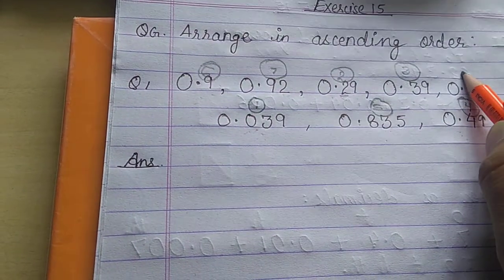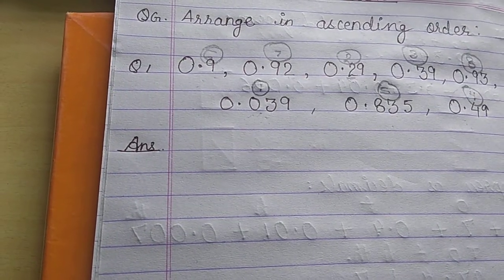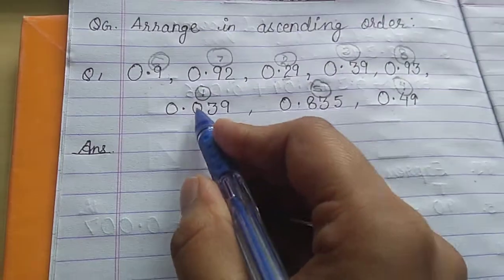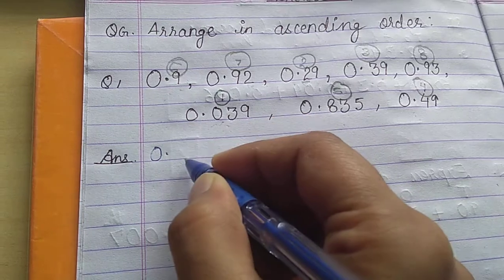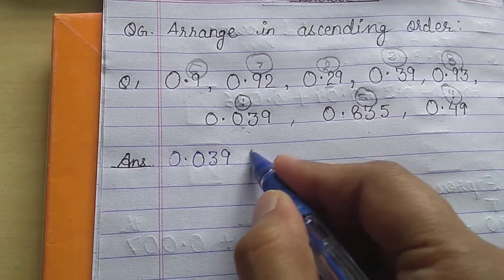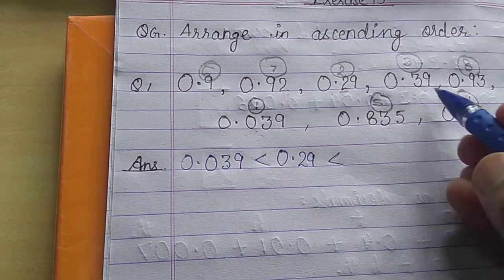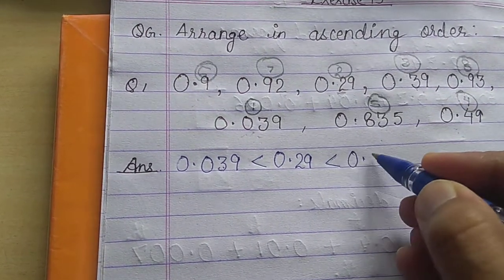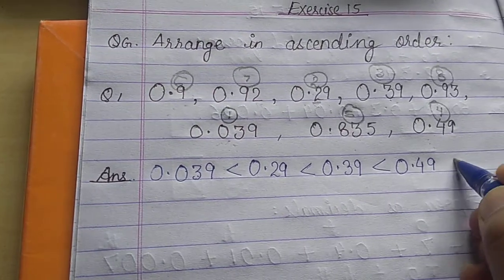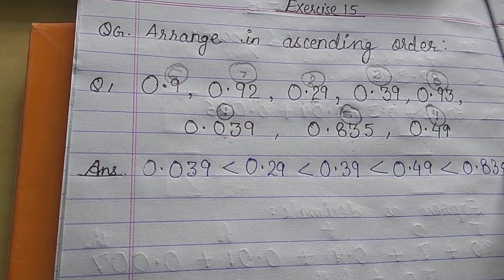And finally, this will be at the eighth place. Now we can write the answer. So first, the smallest number is 0.039. We can write: 0.039 is smaller than 0.29, which is smaller than 0.39, which is smaller than 0.49, which is smaller than 0.835.